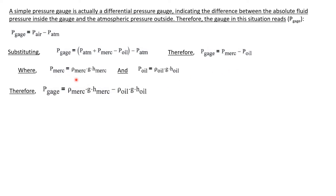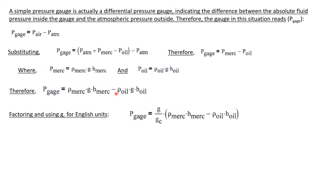The pressure of mercury is ρgh for mercury, and the pressure of oil is ρgh for oil. Substituting, the gauge pressure equals ρgh for mercury minus ρgh for oil. Factoring out the common term g, and because we are using English units, we divide by g_c to make the units work. This leaves us with g over g_c, times the quantity (ρH for mercury minus ρH for oil).